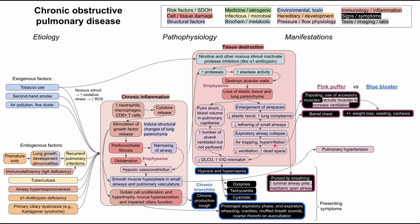Another manifestation — from air trapping and hyperinflation — is that these people tend to have a larger chest. They may present with a barrel chest. This also manifests in their lung volumes: they have a higher total lung capacity and higher FRC. They'll also have a higher AP (anterior-posterior) diameter, and hyperresonance on percussion when listening to their lungs.